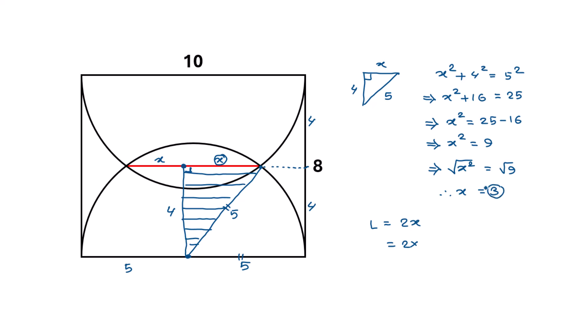This is equal to 2 times x. The value of x is 3, so substituting here we can write 2 times 3 is 6, so the length of the red line is 6 units.